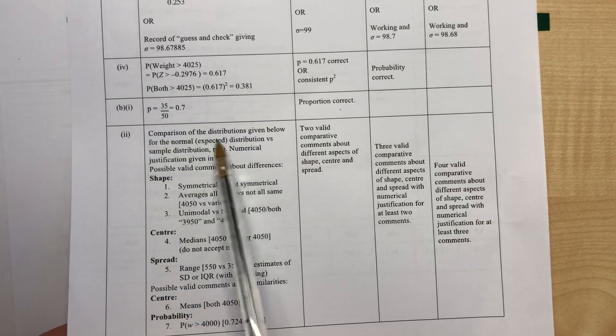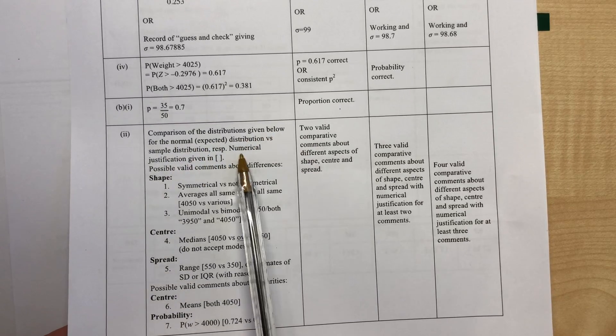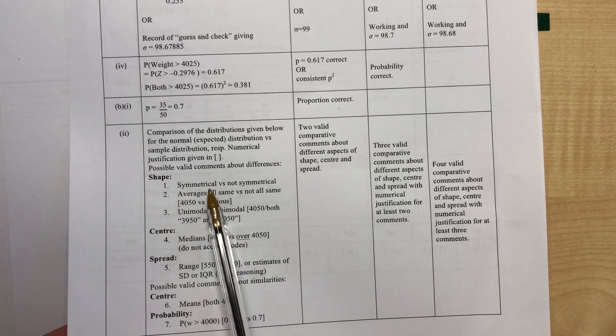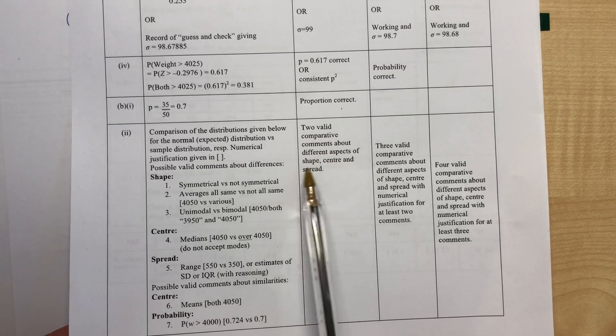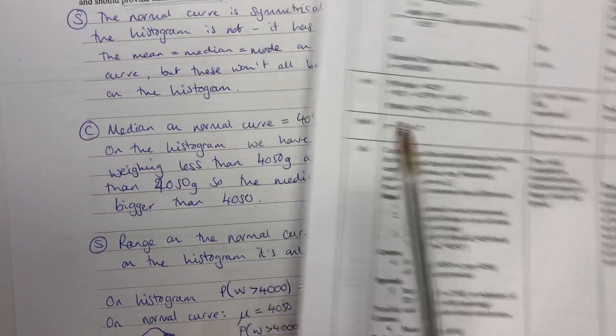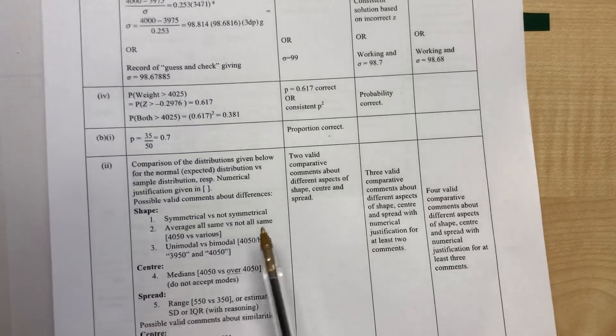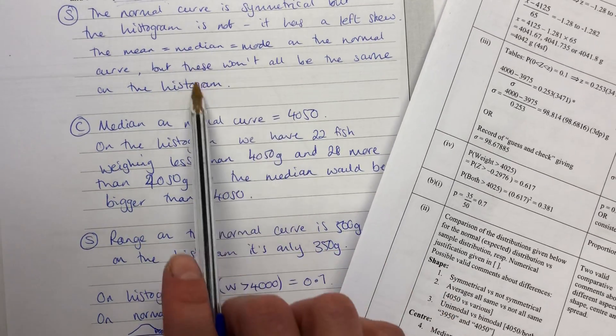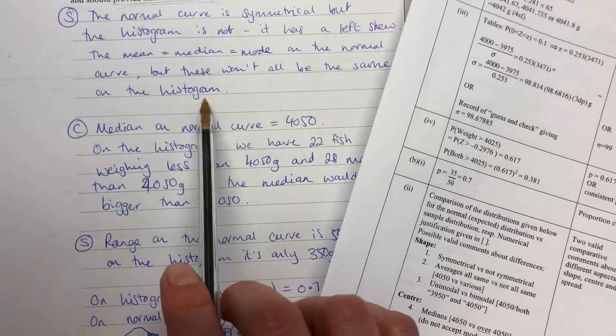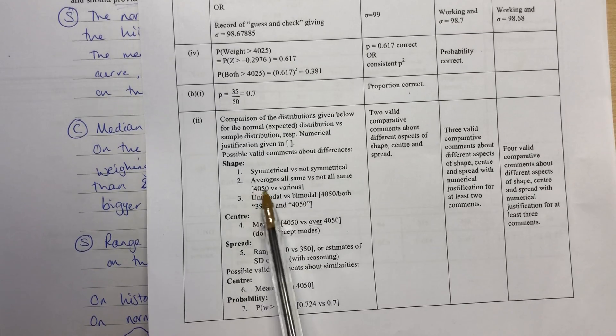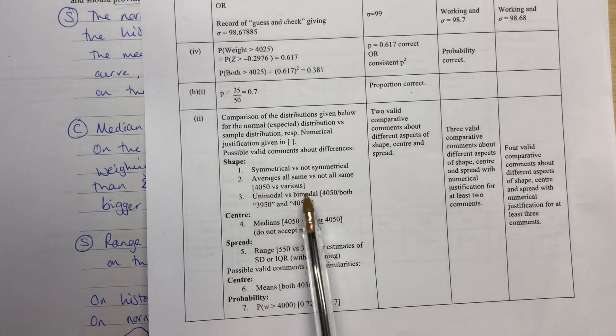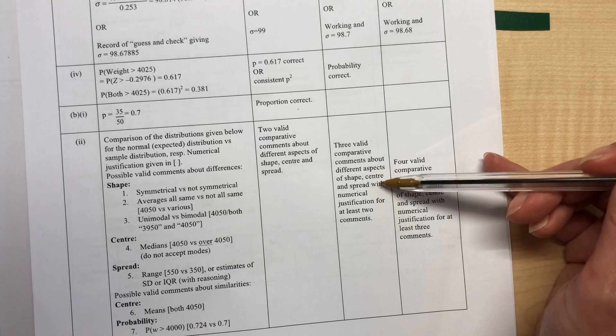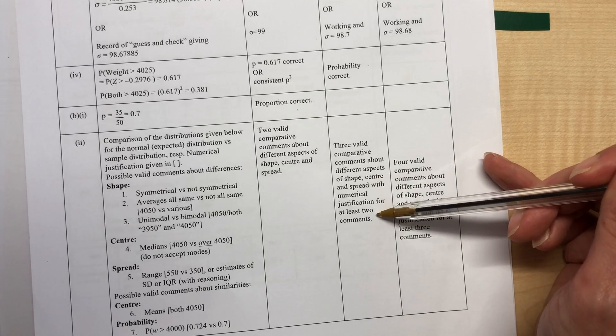So we have a comparison of the distributions is given with numerical justification, and they've shown numerical justification in square brackets here, so we can compare what we're doing. So symmetrical versus not symmetrical. We want two valid comparative comments made for achieved. So we have one by having said it's not symmetrical. Then we have the averages are not all the same. So we've said here average is not all the same. That's the second point. Though I didn't justify it with numbers there. We could have added in that it would be 4,050 for the normal curve or the averages, but on the histogram, it would be lots of different numbers.